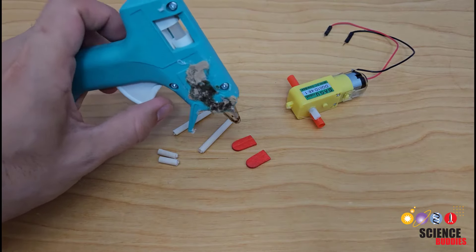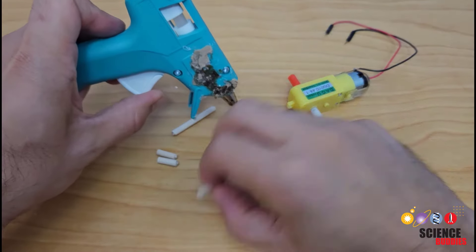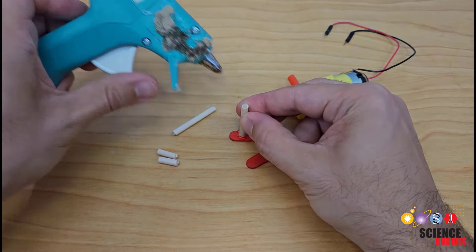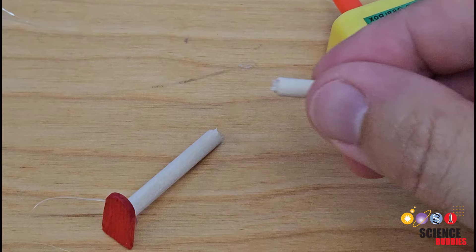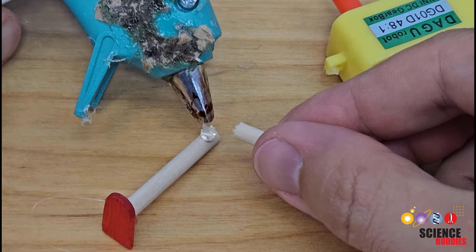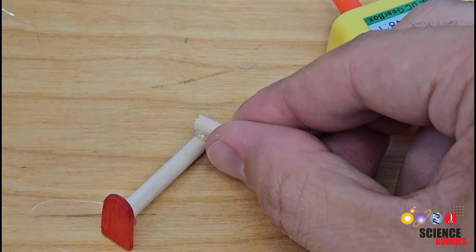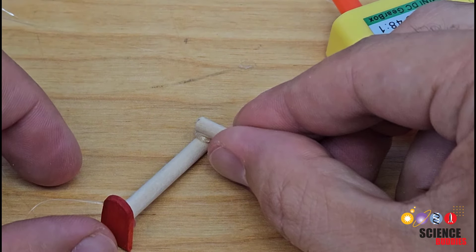To attach the legs to the feet, put a blob of hot glue in the middle of the foot and then hold one of the legs vertically on the foot until the glue dries. You can then take the two smaller pieces and glue one horizontally to the top of each leg forming a right angle. Again, hold it in place until the glue dries so you make sure the angle doesn't change.